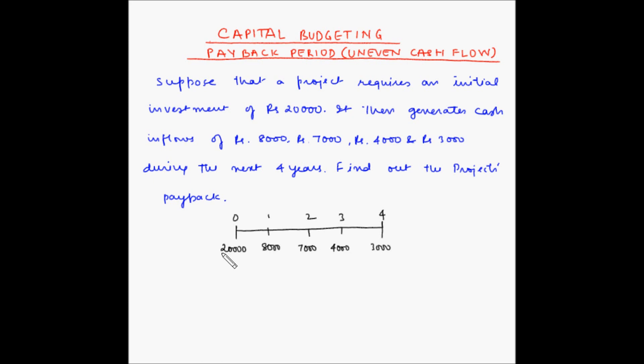Since this is an outflow from our pocket, I'll show this with a negative sign. As part of the payback period method, we need to find out within how much time we will be able to recover the original investment of 20,000 rupees.